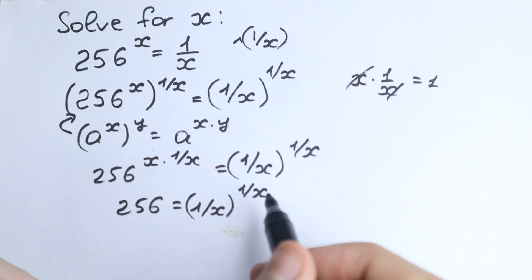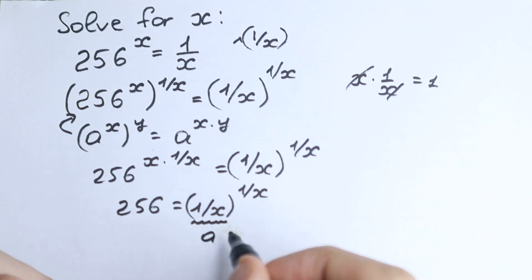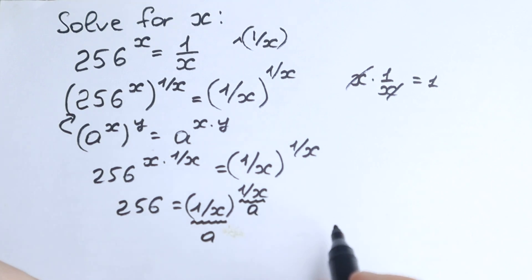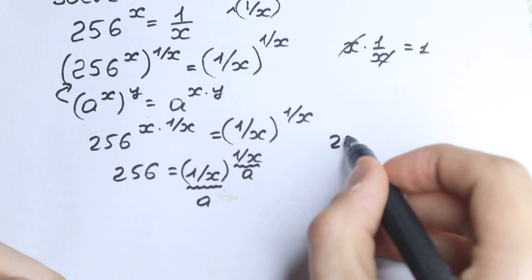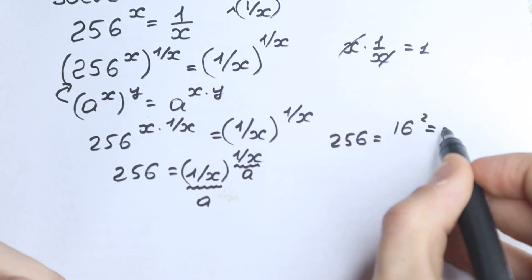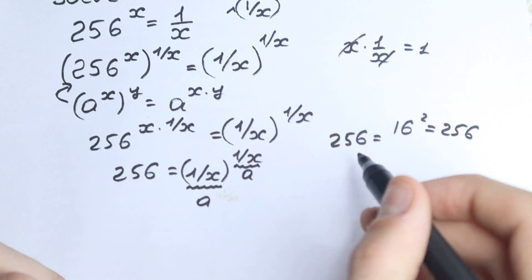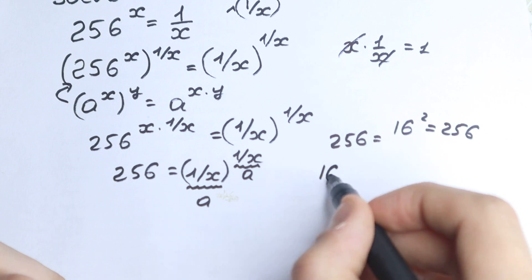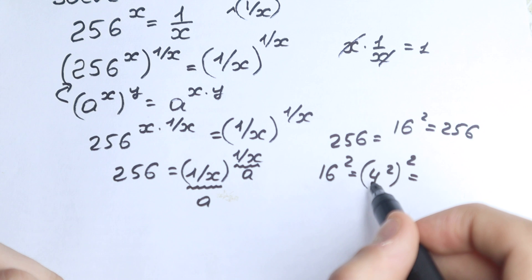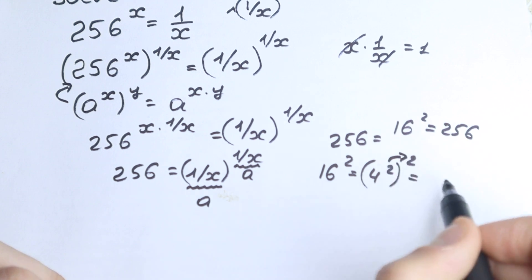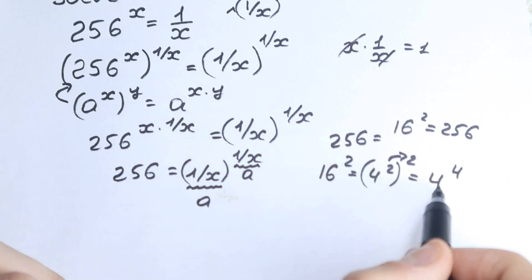Now let's look at what we need to do. We need to create the same base and same exponent, because on the right hand side we have 1 over x as the base and 1 over x as the exponent — the same expression. On the left hand side we have 256. We know that 16 squared equals 256, and we can write 16 as 4 squared, so 256 equals 4 squared to the power 2, which by the power rule equals 4 to the power 4.